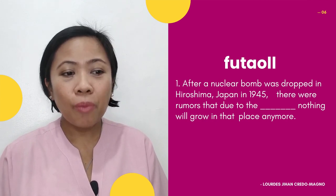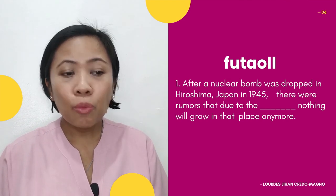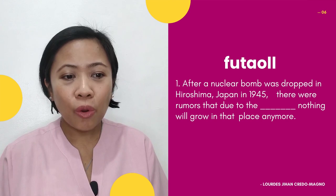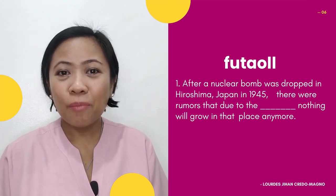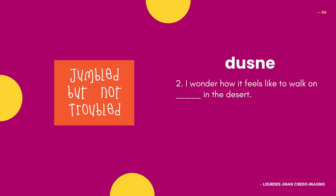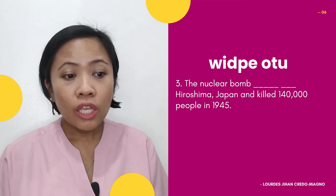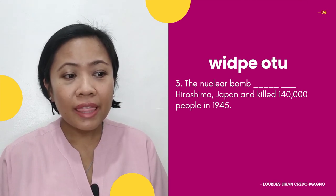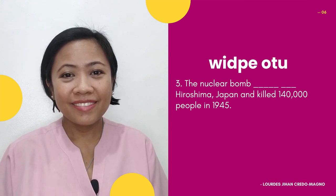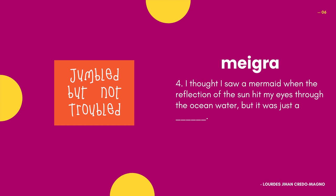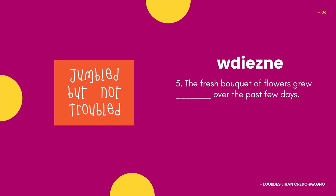Number 1: After a nuclear bomb was dropped in Hiroshima, Japan in 1945, there were rumors that due to the blank, nothing will grow in that place anymore. Number 2: I wonder how it feels like to walk on blank in the desert. Number 3: The nuclear bomb blanked Hiroshima, Japan and killed 140,000 people in 1945. Number 4: I thought I saw a mermaid when the reflection of the sun hit my eyes through the ocean water. Number 5: The fresh bouquet of flowers grew blank over the past few days.